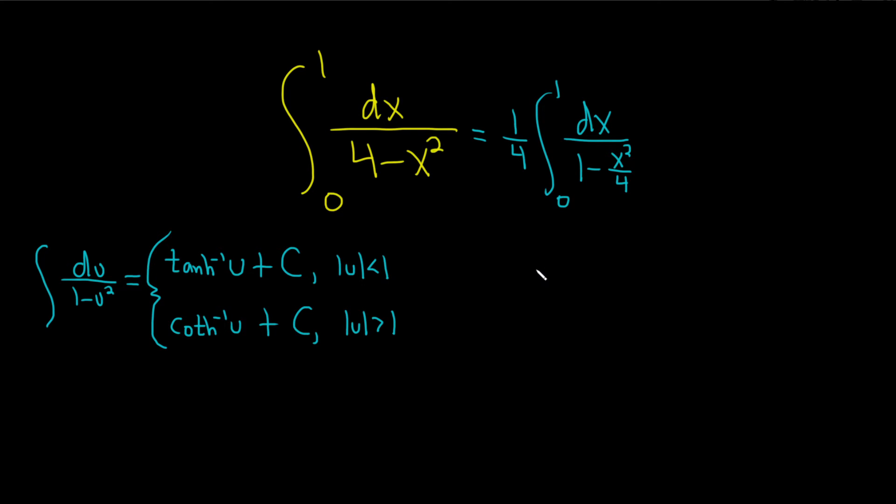And we're not quite there yet, right? We need to have u. So this is equal to 1 fourth, definite integral from 0 to 1, dx over 1 minus, and let's write x squared over 4 as x over 2 squared.